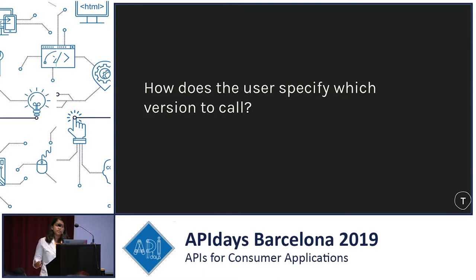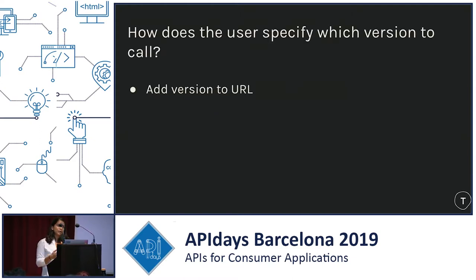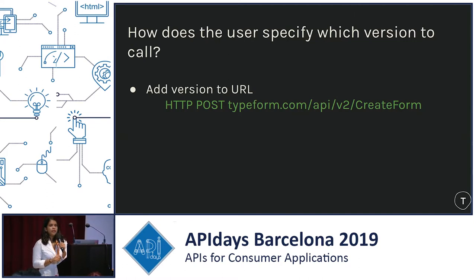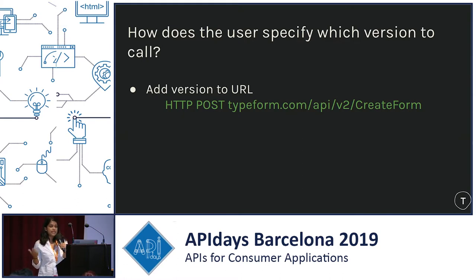The first part of the internal implementation is: how does the user tell you which version they'd like to call? Surprisingly, there's a lot of conversation about this. I'm specifically going to be talking about REST endpoints, but the concepts are applicable to other kinds of endpoints as well. The first option would be to add a version to the URL — you can see a v2 in the URL here. This is kind of an easy place to put the version, but a lot of people have problems with it because they say the URL is supposed to describe the resource or entity you are modifying or accessing. Some people would say that v2 is not actually a different resource than the v1 of CreateForm.